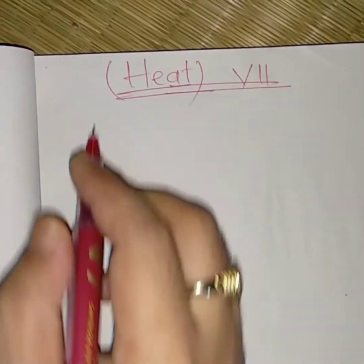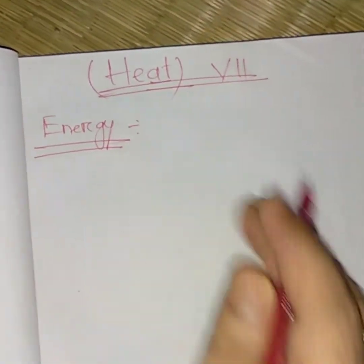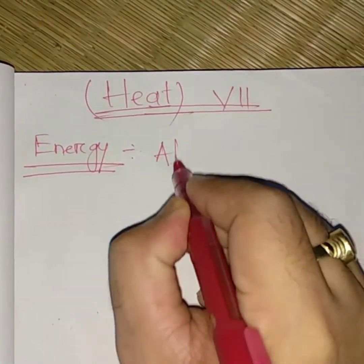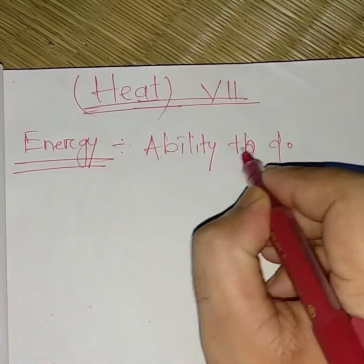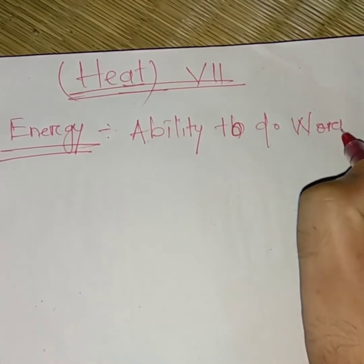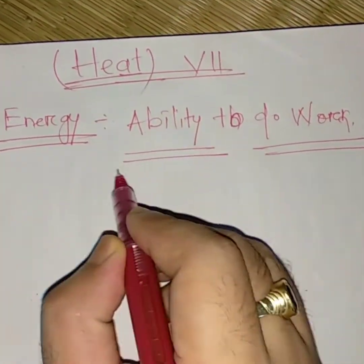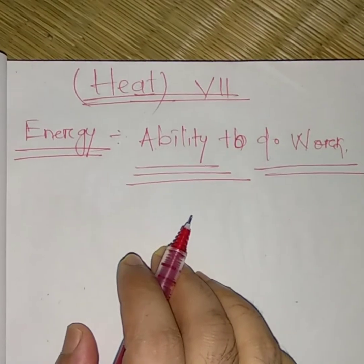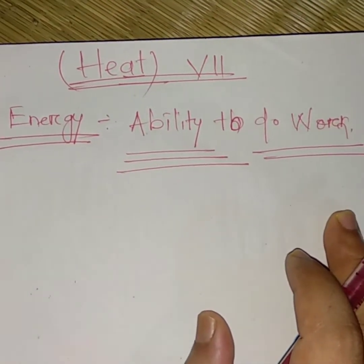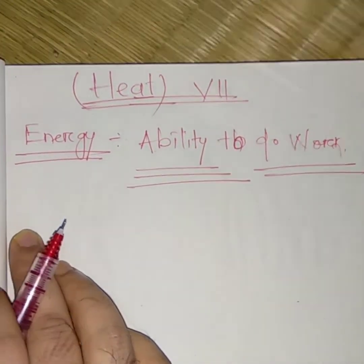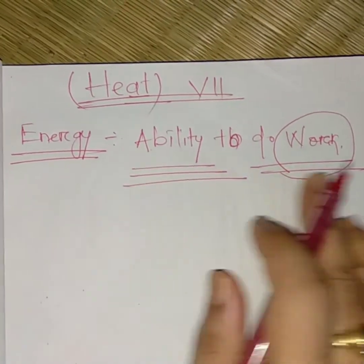In the HIT chapter, first we need to understand energy. Energy means what is the ability to do the work. The ability to do the work is called energy.